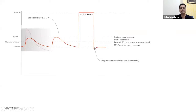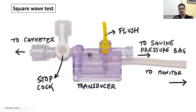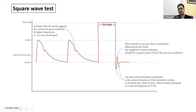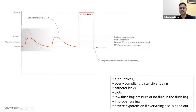Overdamping occurs when there are air bubbles in the system, when the tubing is overly compliant and distensible rather than rigid, when the catheter is kinked, or when there is a clot inside the system blocking flow. When you observe an overdamped or flattened waveform, you must investigate these causes and correct them before trusting the pressure values being displayed. Ensuring a rigid, non-compliant tubing system free of air bubbles and clots is essential for accurate arterial pressure monitoring.